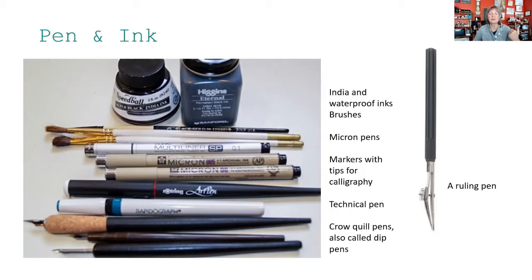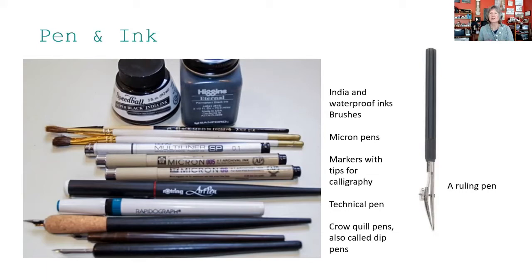One of my go-to favorites that I haven't shown is just a black ballpoint pen or roller gel pen, usually fine or medium, because it's so easy to take with me. I also wanted to show the ruling pen on the right — if you've ever inherited a drafting kit, you'd find one of these. It allows you to make very even straight lines and was used a lot by architects, but it's also fun for drawing buildings.